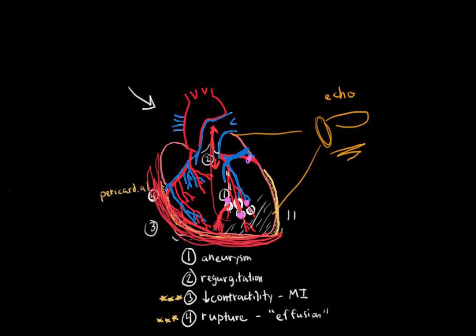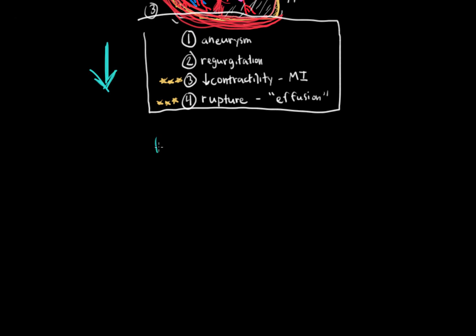If a patient has any of these abnormalities on echocardiogram, to prevent further complications, we need to look into the treatment of Kawasaki disease. Once you reach the diagnosis of Kawasaki disease, there are two treatments.